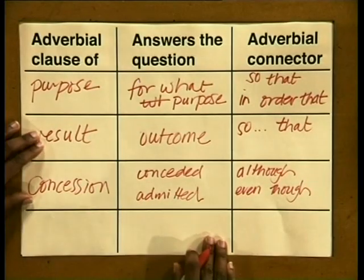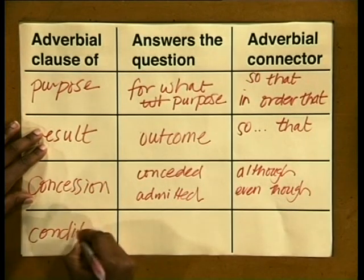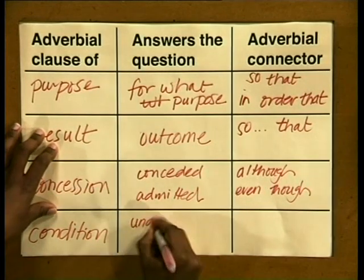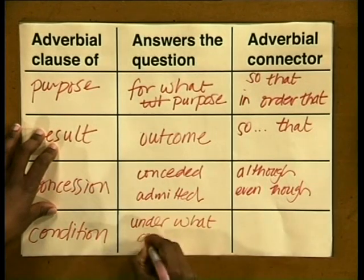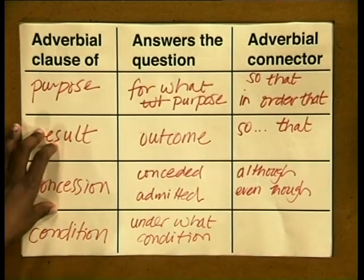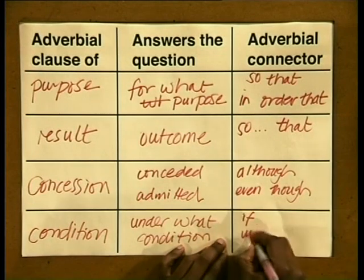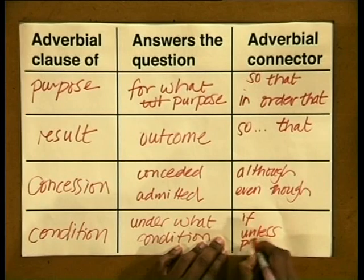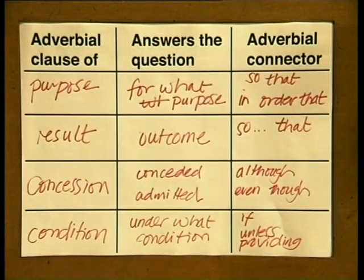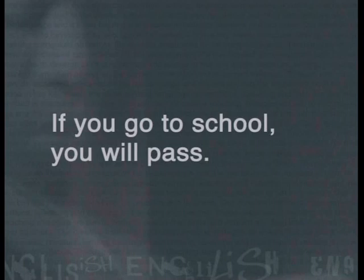And finally, the last type of adverbial subordinate clause gives the condition under which the verb in the main clause occurs. It's called an adverbial clause of condition, and it states under what condition the verb occurs. It's introduced by the words: if, unless, or providing. Here is a sentence where the condition is given: 'If you go to school, you will pass.' The condition of passing is going to school.